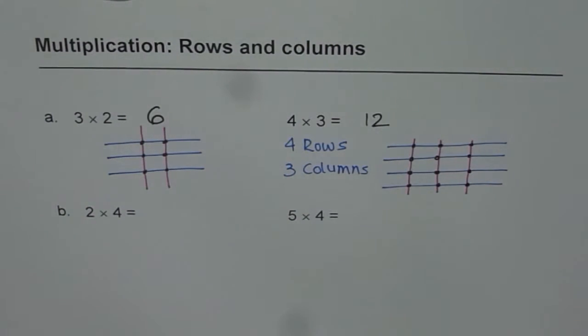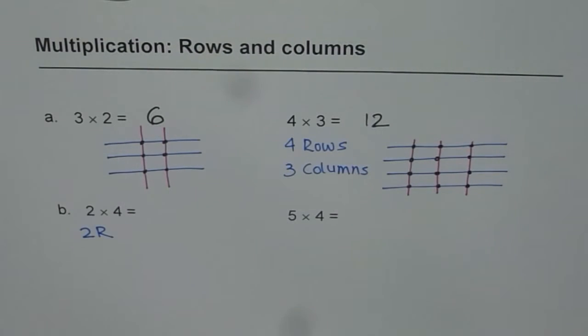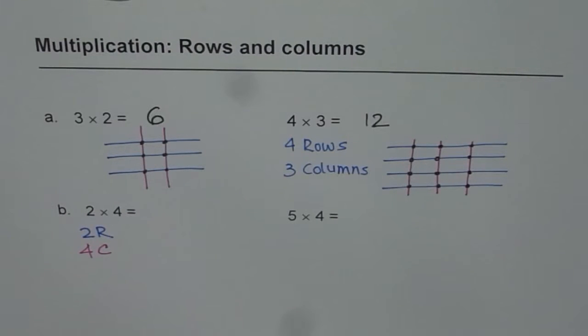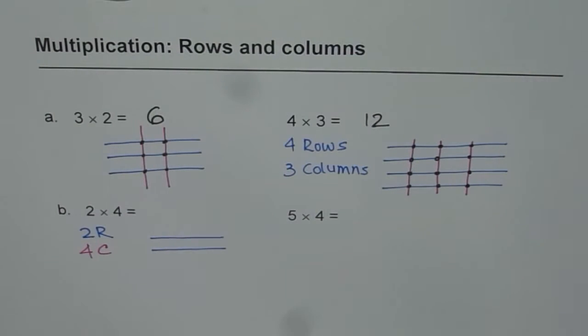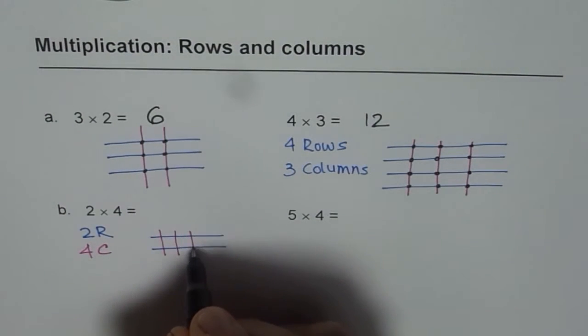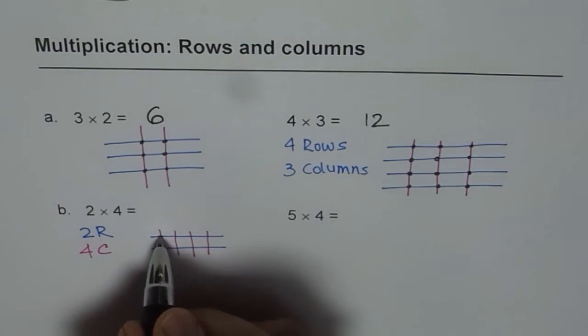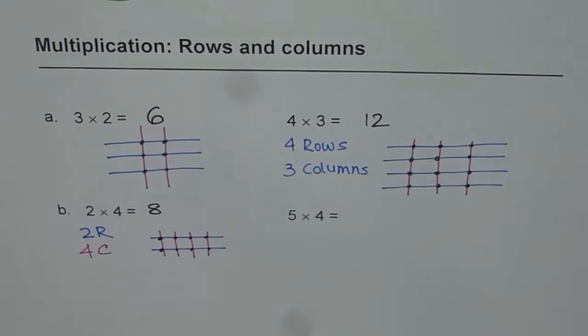Let us repeat. Now, this time, we will do 2 rows. So, I am writing rows by R, 2 rows and 4 columns. So, let me draw 2 rows first. These are my 2 rows, and then 4 columns, 1, 2, 3, 4. Let us count the points where they intersect. 1, 2, 3, 4, 5, 6, 7, 8. So, 2 times 4 is 8.